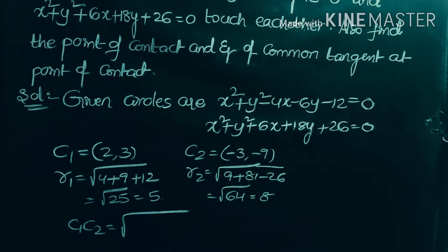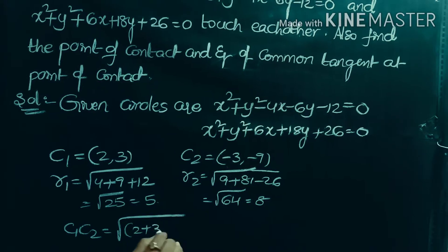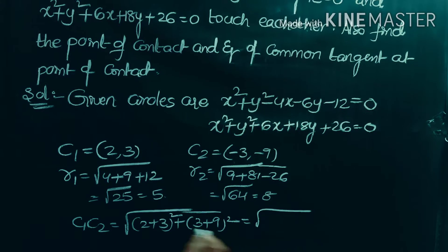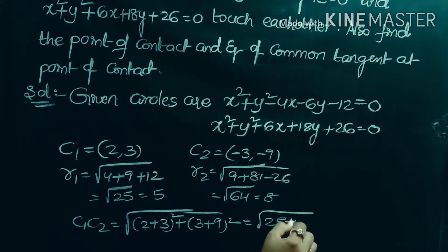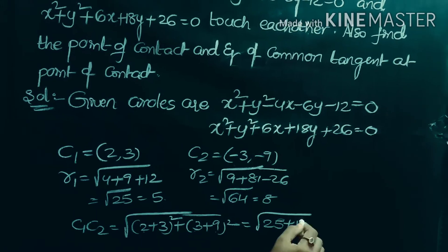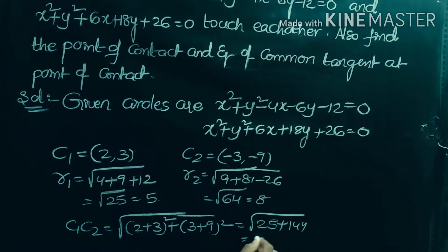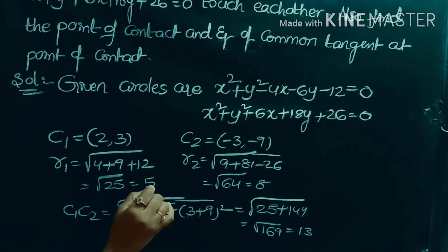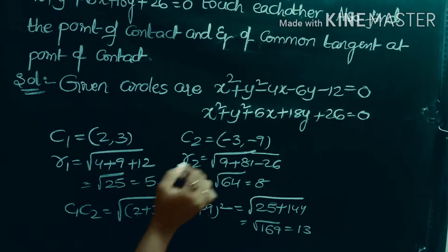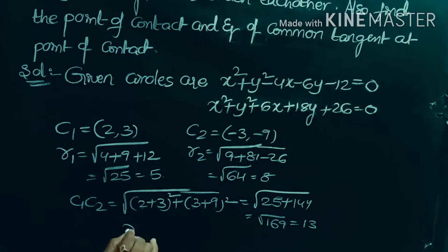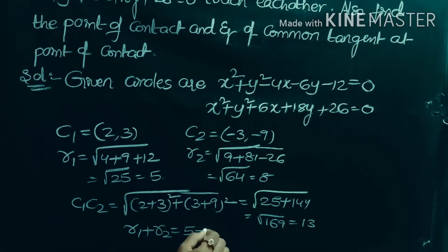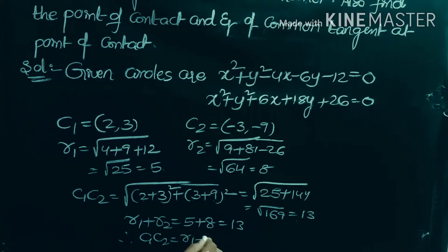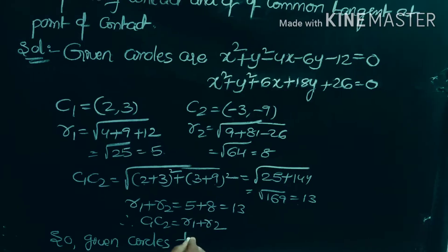Finding c1c2: the distance between the centers is √((2+3)² + (3+9)²) = √(25 + 144) = √169 = 13. Therefore c1c2 = 13. Since r1 = 5 and r2 = 8, we get r1 + r2 = 5 + 8 = 13. Therefore c1c2 = r1 + r2, so the given circles touch each other externally.